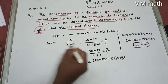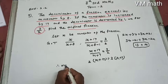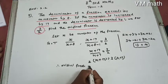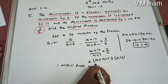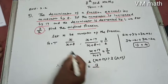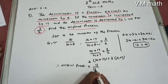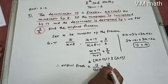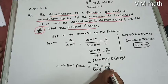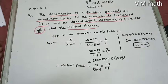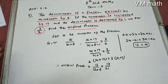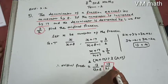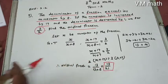Using the value x equals 13, the original fraction is x divided by x plus 8, which is 13 divided by 13 plus 8, equal to 13 divided by 21. Therefore, the original fraction is 13 by 21.